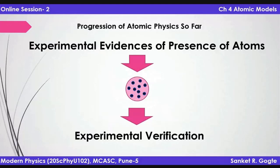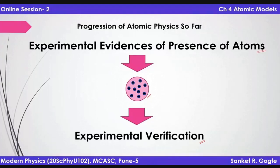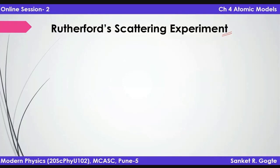We are following this theme of science — how science developed with theory and experiments hand in hand. We had experimental evidences that atoms exist, then Thomson proposed an atomic model. The next step was to experimentally verify whether atoms can actually have the structure as proposed by Thomson's atomic model. That experiment was Rutherford's scattering experiment, which tested whether the atomic structure can be as proposed by Thomson.